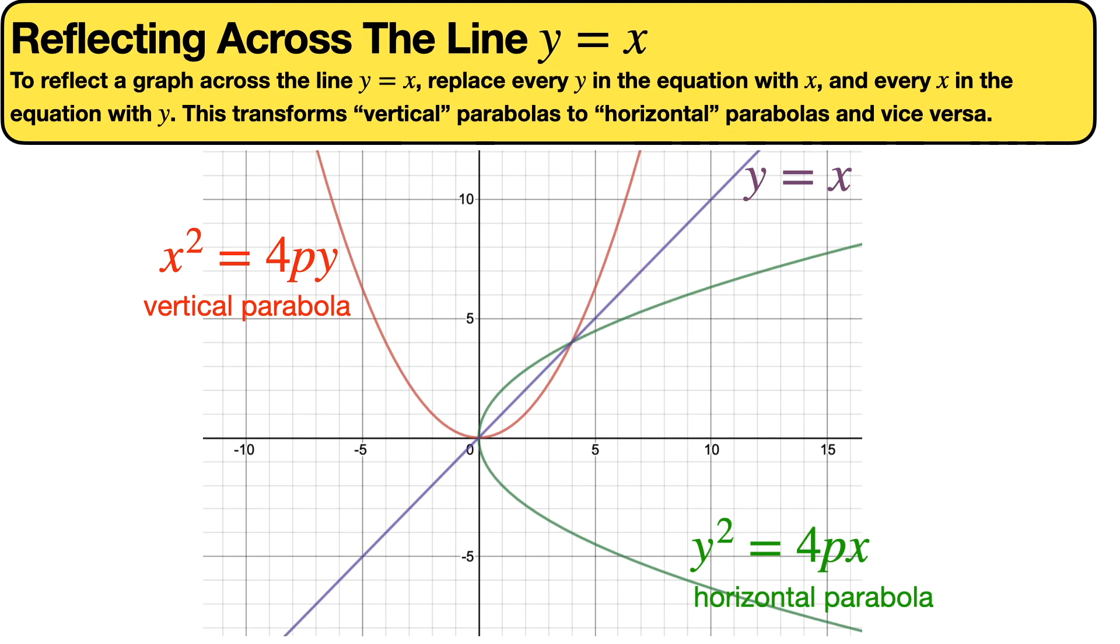And so in order to reflect something across that line, all we need to do is replace x with y in the equation. So the general equation for a horizontal parabola is y² = 4px, as opposed to x² = 4py.